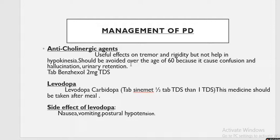The management includes giving the patient anticholinergic drugs to decrease acetylcholine, which helps decrease tremors and rigidity. However, it would not help with hypokinesia, as it has no effect on hypokinesia or gait.